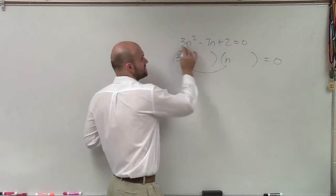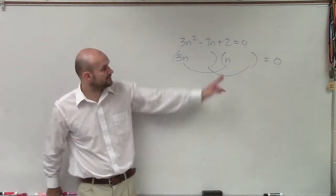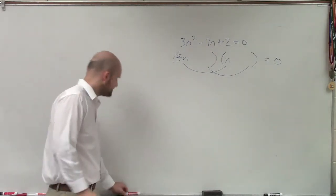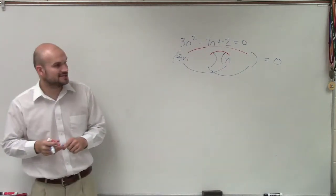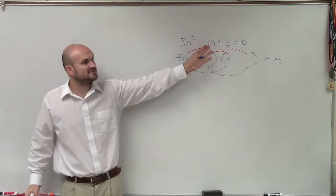So therefore, I know that these two have to multiply to 3n squared. And those two have to multiply to a positive 2. But then when I do the middle and the last terms, or the inner and the last terms, I know that when I multiply them and add those together, I have to get a negative 7n.